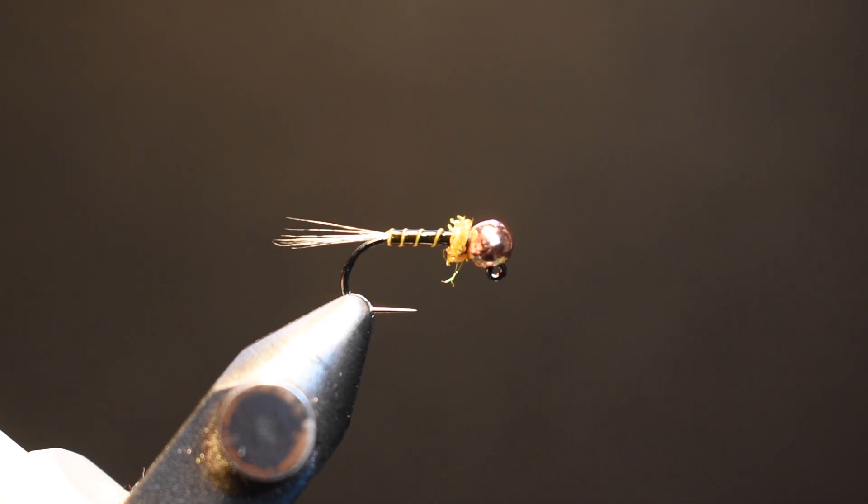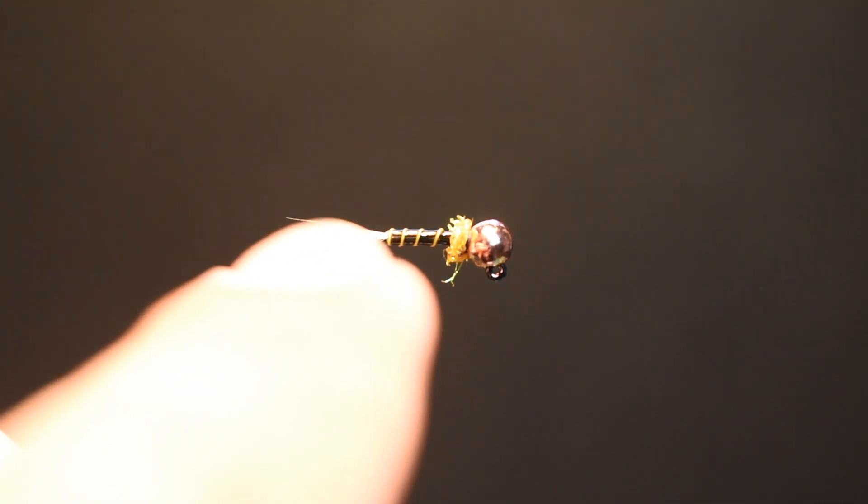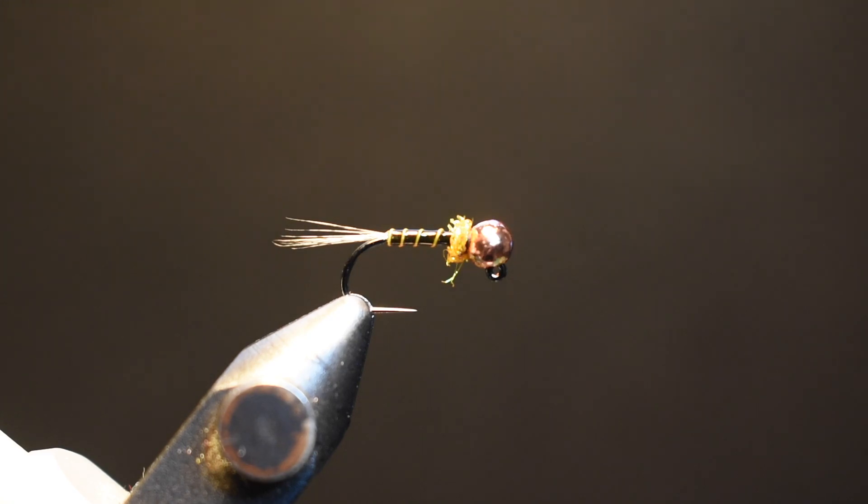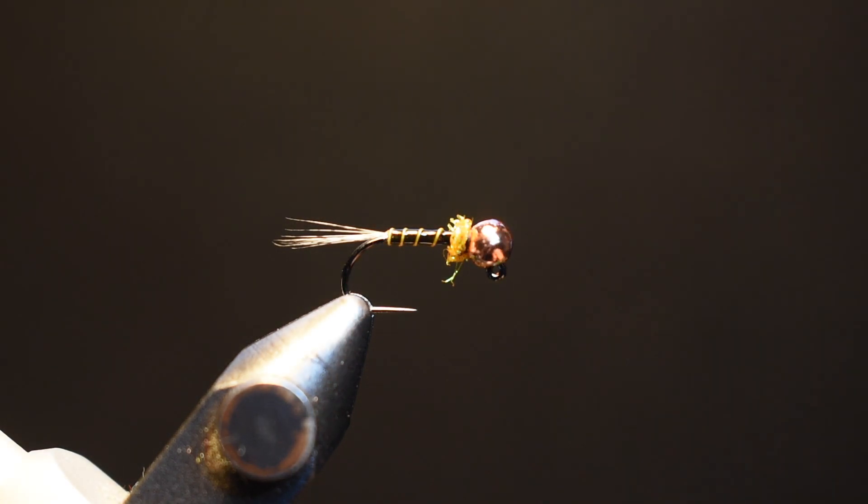This is a really great pattern for your euro nymphing setups, dry dropper rigs, anything like that. Because of that real slender profile of the body, it sinks extremely quick and fast. This is one of the patterns that Jude was using while we were out on the water with him, so you can check out that link.